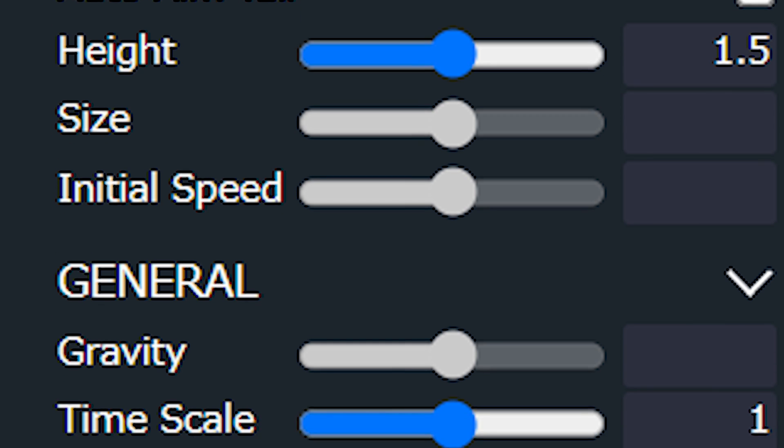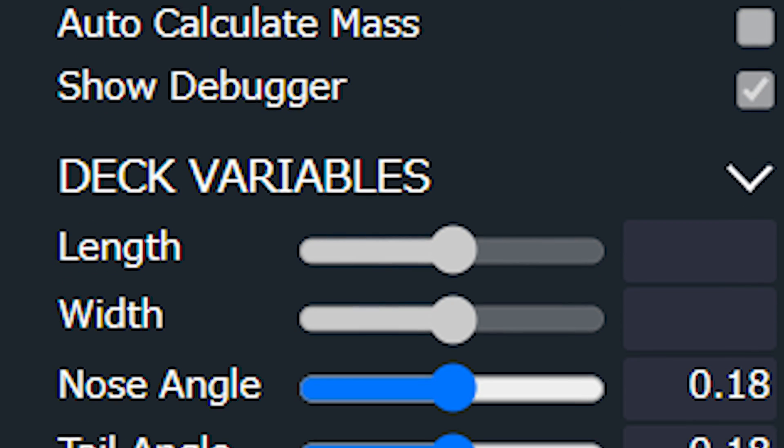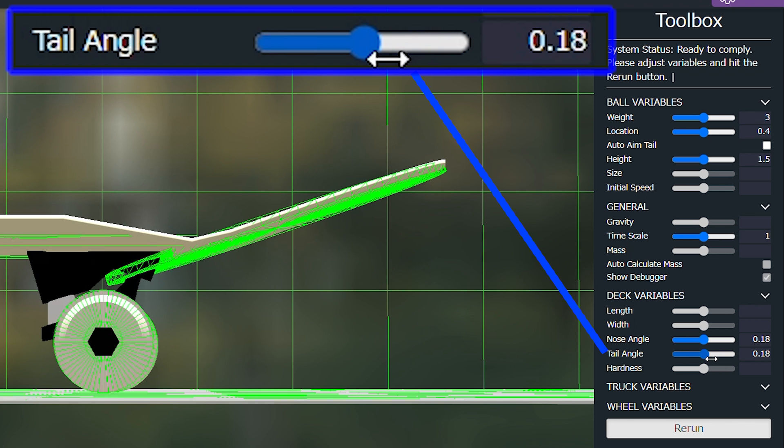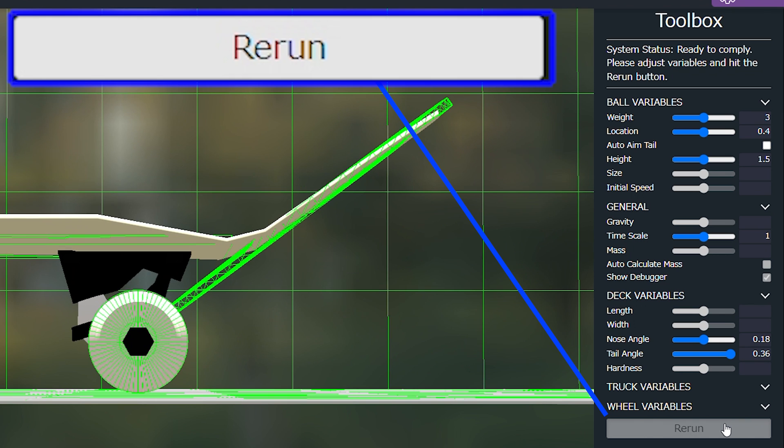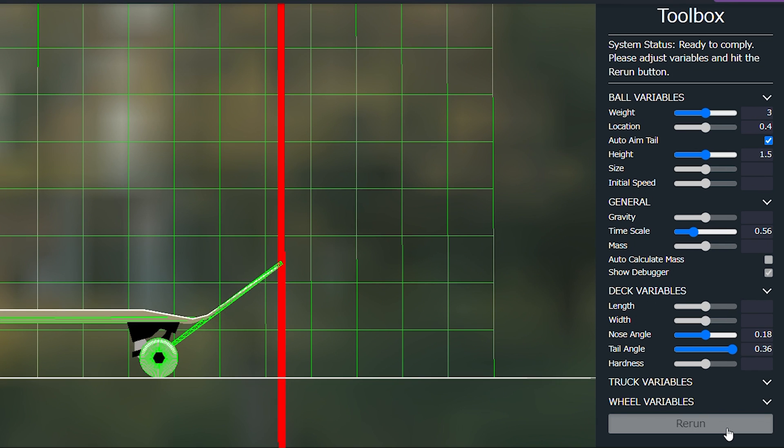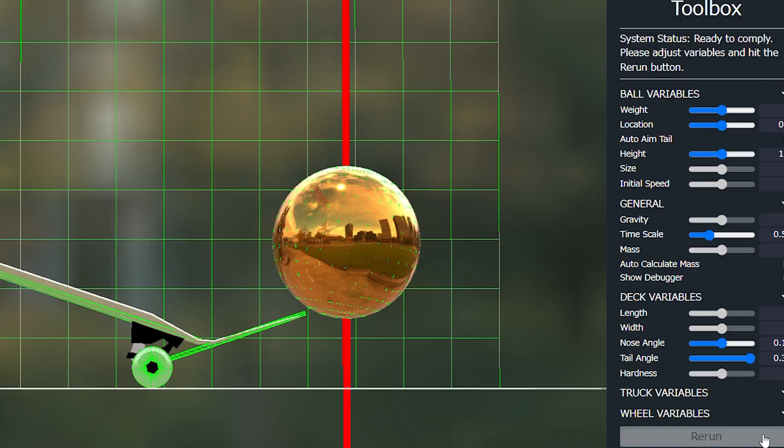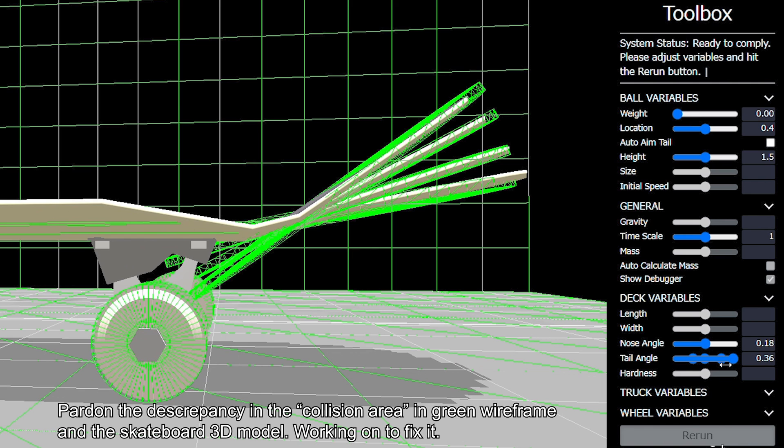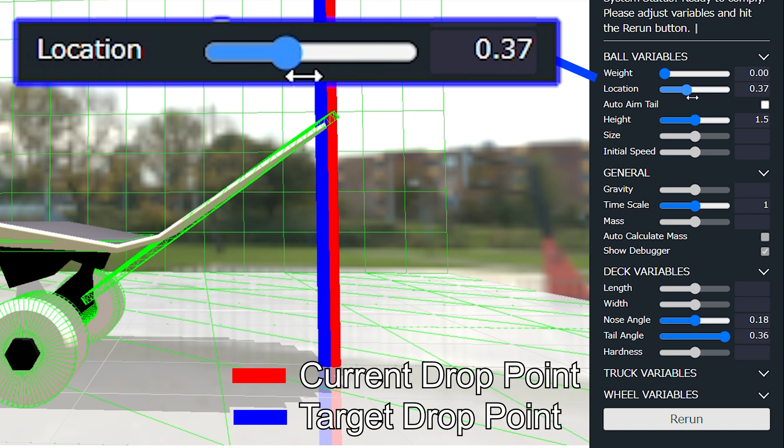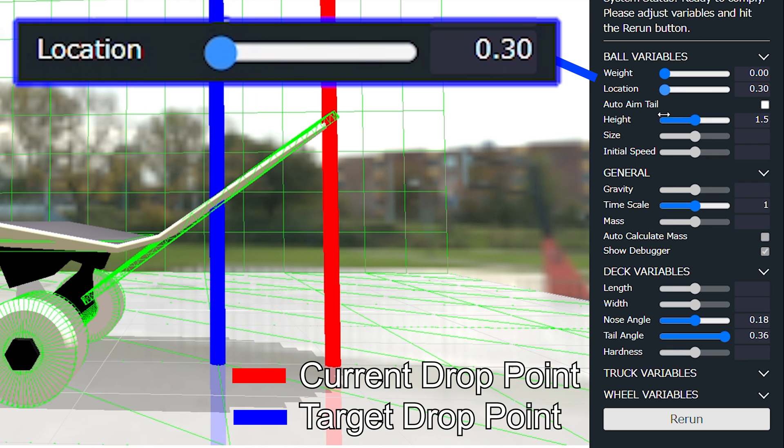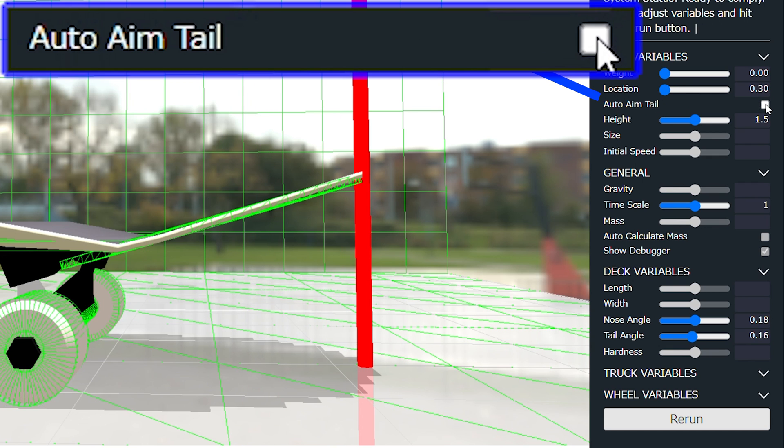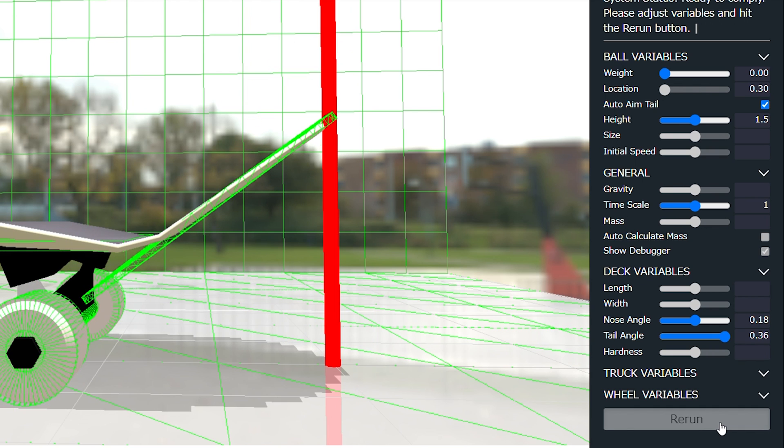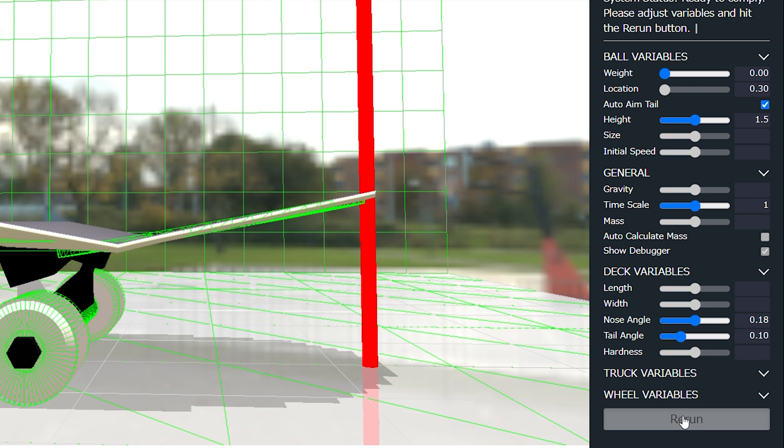This system allows you to adjust various elements of your choice, including the angle of the tail and nose. For example, set the tail angle bigger and press a rerun button. And the system will generate the tail with the specified angle and drop a sphere on top of it. This sphere pushes down on the tail to simulate a pop. Since the position of the end of the tail changes depending on the angle, the position at which the ball falls can also be adjusted. Use the Auto Aim Tail function to automatically drop the sphere at the edge of the tail, as it takes some time to adjust it manually.